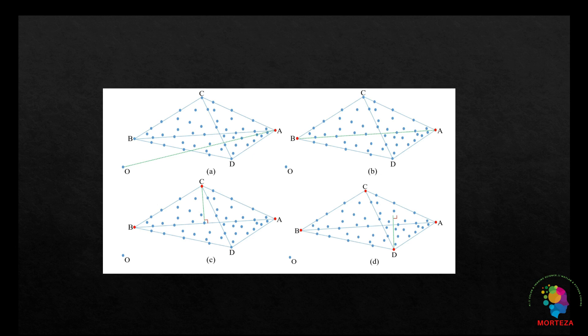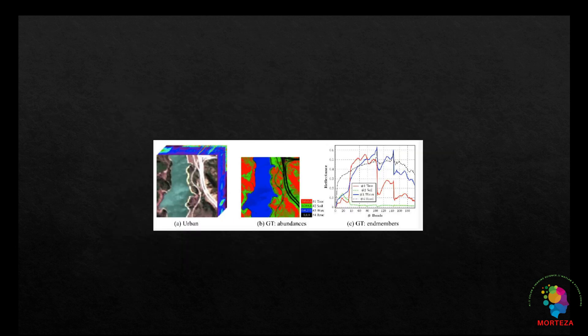Now that the end members are specified, we can use them to classify the hyperspectral image, which can be done by performing maximum abundance classification, or MAC. An abundance map characterizes the distribution of an end member across a hyperspectral image.